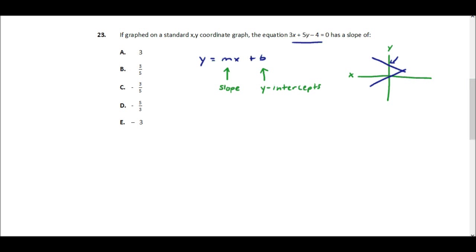So that should be y-intercept, not y-intercepts. And so then these two variables, x and y, are just any point on the line.